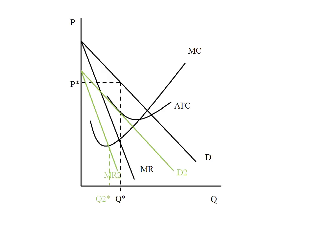We'll call this Q2 star. We'll go up to our new demand and over and charge P2 star. So we notice that when demand decreased, this firm's optimal quantity fell, this firm's price also fell, and this firm's average total cost rose.